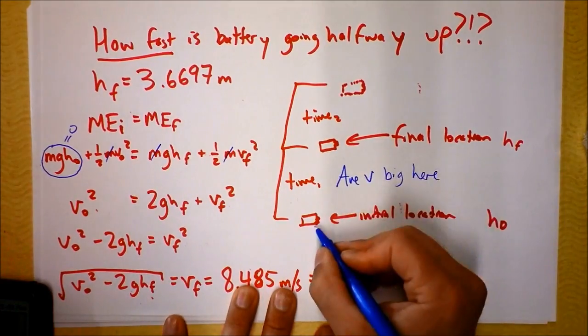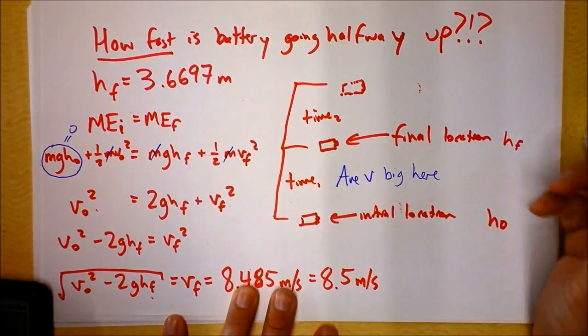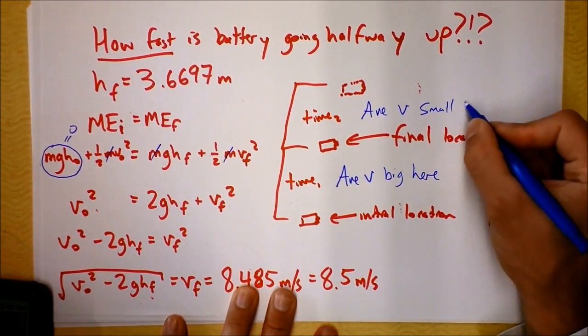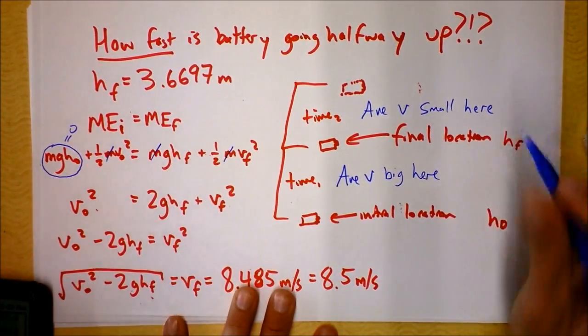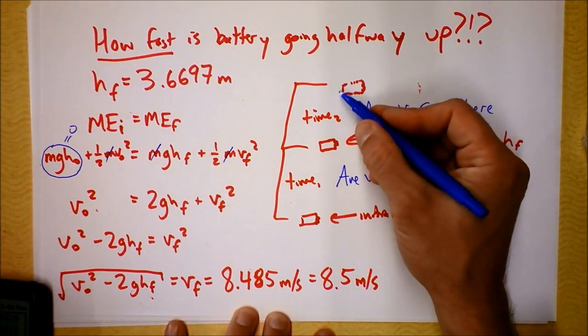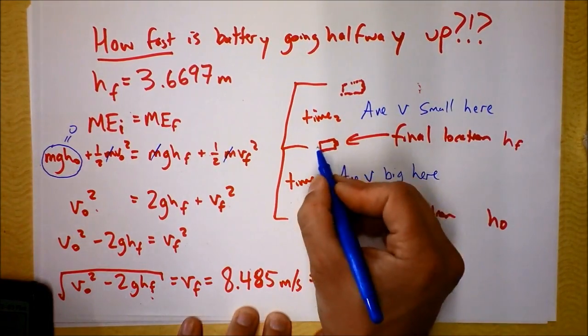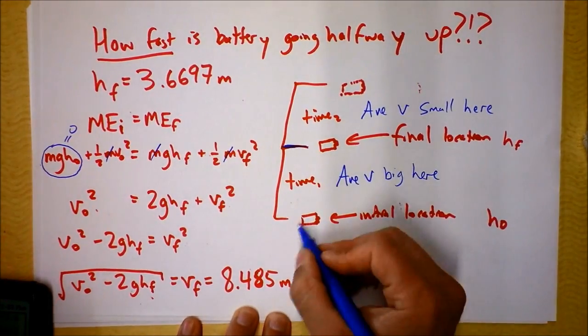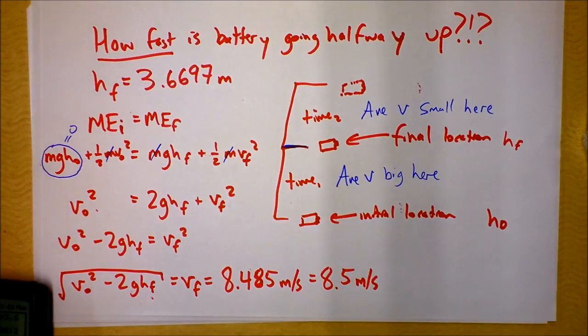The average velocity is bigger when it's going faster, closer to the initial launch, and the average velocity is smaller up here. So that makes sense that this time will be a lot longer because it's going slower on average. And that explains why the velocity right here at the middle is more than half the velocity at the launch. Questions? Put them in the comments.